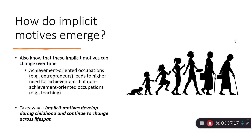Implicit motives can also change over time. For example, being in a high achievement-oriented occupation can lead to a higher need for achievement than being in a non-achievement-oriented one. Put the same people in an entrepreneurship role — very high need for achievement — and their achievement motivation rises. Put someone in teaching, which is typically less achievement-oriented, and that motive may be lower. The key takeaway is that implicit motives develop during childhood but continue to change across our entire lifespan based on our experiences.